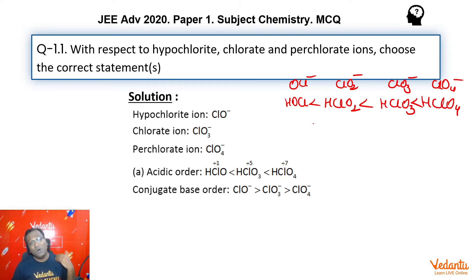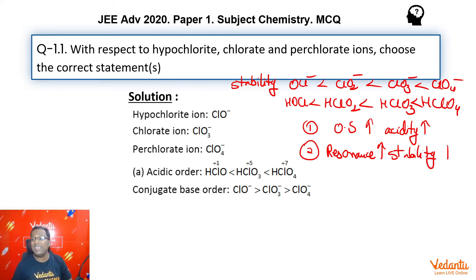Why is that so? Because the conjugate base is more stable. This becomes the order of stability of conjugate base. Now, why is this the stability order of conjugate base? Two reasons. First reason is oxidation state. As oxidation state increases, the acidity increases. Second, also if you will see, resonance is increasing. As resonance increases, the stability of compound increases.